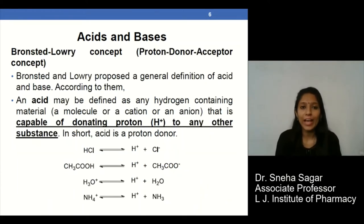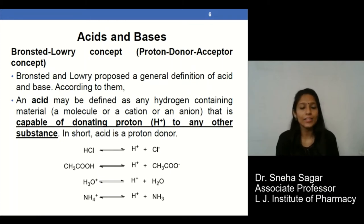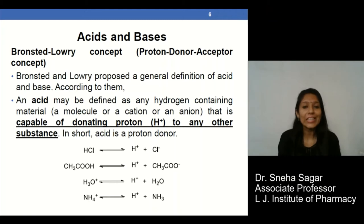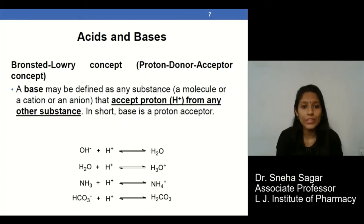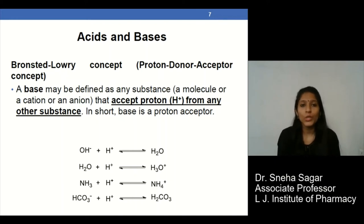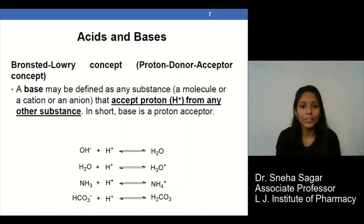The next theory for acids and bases is the Bronsted-Lowry theory, also known as the proton donor-acceptor concept. In this concept, an acid is defined as any hydrogen-containing material capable of donating protons to other substances — for example, HCl can donate H⁺ ions. A base is defined as any chemical which accepts H⁺ from another substance; OH⁻ has the tendency to accept H⁺ and form water, so it is termed a base.